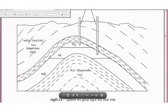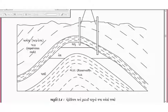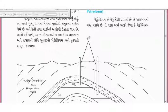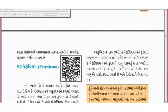પેટ્રોલ્યમ અને કુદ્રતી વાયુ ઘણીવાર સાથે જ જોવા મળે છે. અહીં આ આકૃતિ - Reservoir Rock - Water, Oil, Gas layer - Impervious/Impermeable Rock - Oil well - Petroleum - gas - Petroleum - gas - Petroleum - gas - Petroleum - gas - Petroleum. Petroleum - gas - Petroleum - gas - Petroleum - gas - Oil - water - oil - gas - Petroleum - oil well - Gas - Petroleum - gas - gas - oil - water.